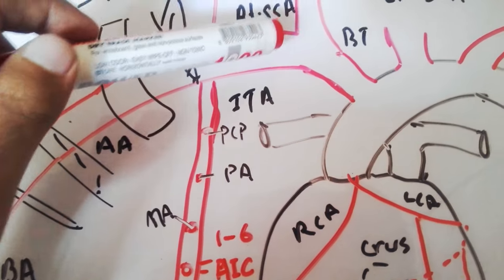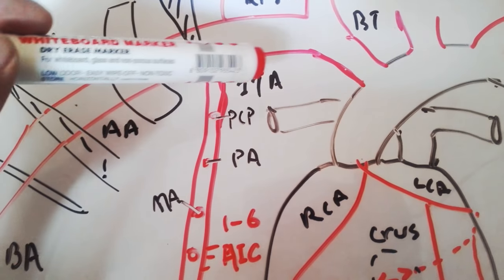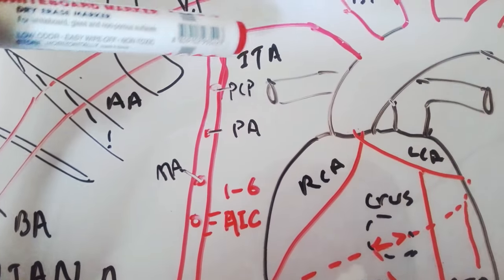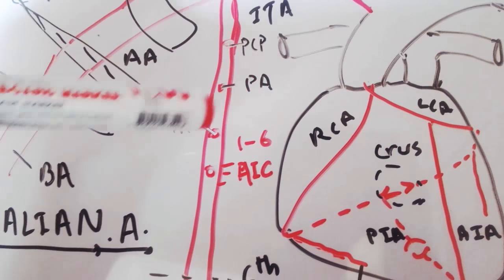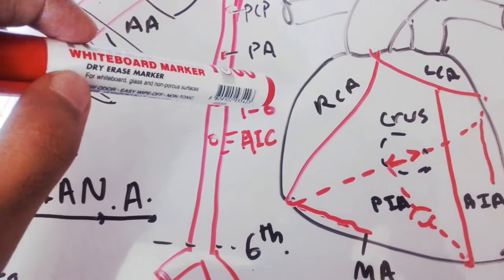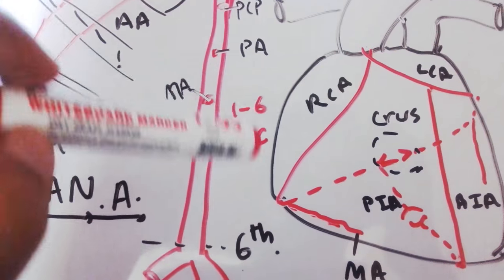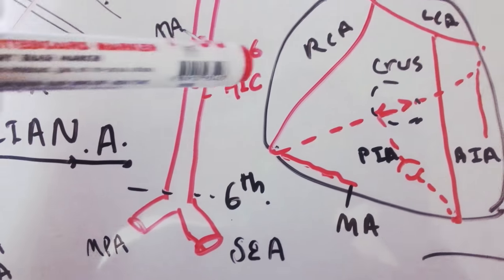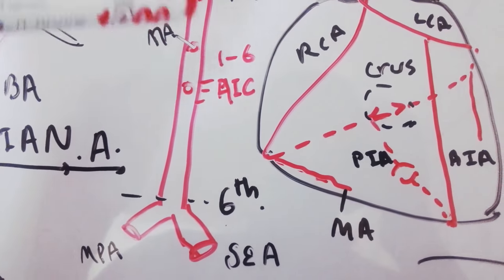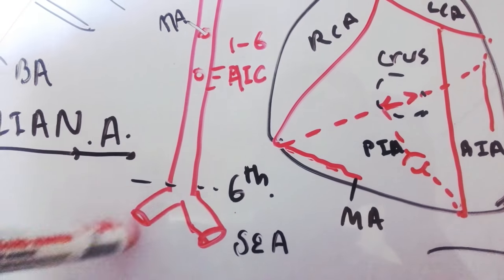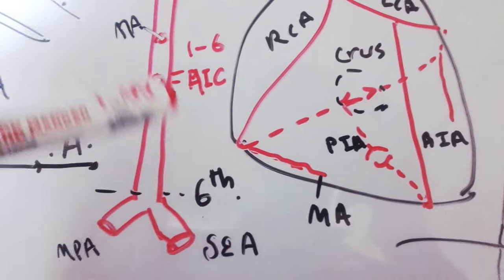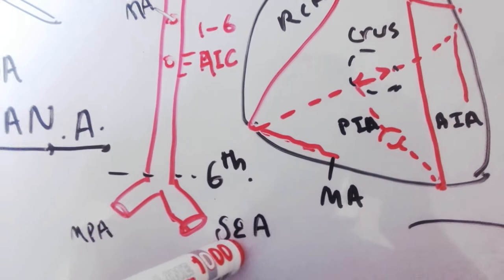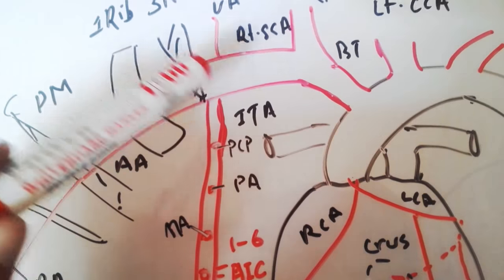The internal thoracic artery is an important branch of the subclavian artery that supplies the thoracic region. It extends up to the sixth costal cartilage, and its branches are the pericardiophrenic artery, perforating artery, mediastinal artery, and anterior intercostal arteries for the first to sixth intercostal spaces. The terminal branches of the internal thoracic artery are the musculophrenic artery and the superior epigastric artery.